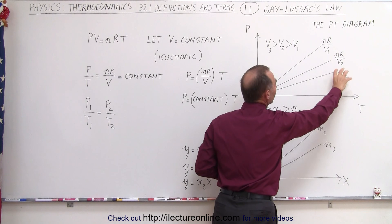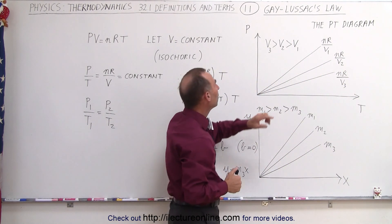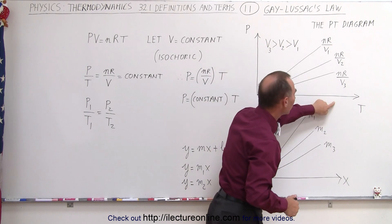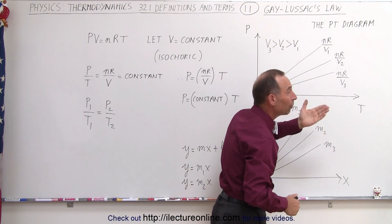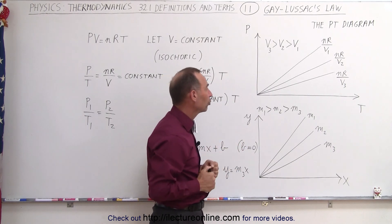So we have a linear relationship between the pressure and the temperature, and that relationship, the slope of that relationship, depends on V. The larger V, the smaller the slope.